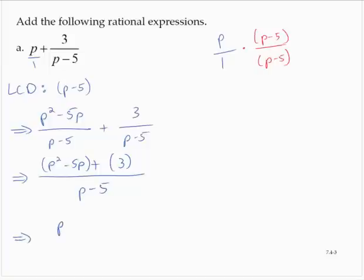Simplifying gives p square minus 5p plus 3 over p minus 5.